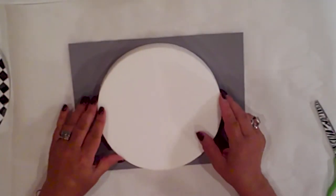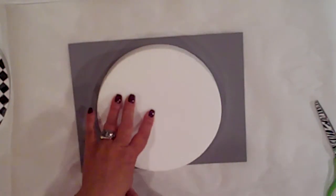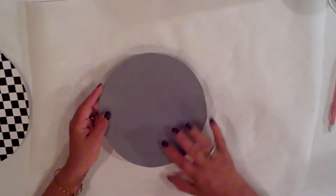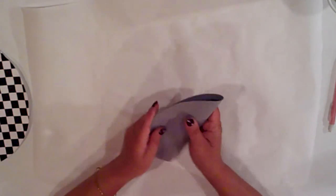Now I'll make a template by tracing my styrofoam disc onto some cardstock, and then I'll cut that out too. Once cut, I'll fold it in quarters and then in half again, keeping the edges aligned.